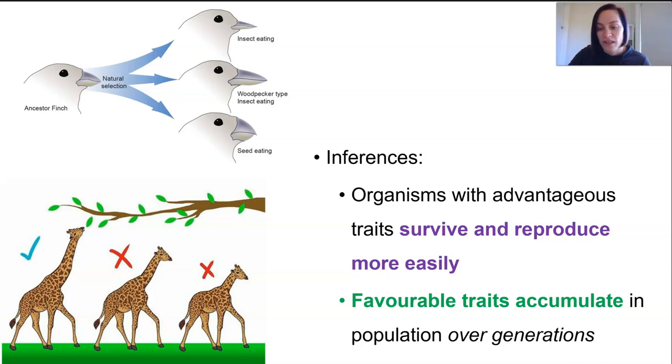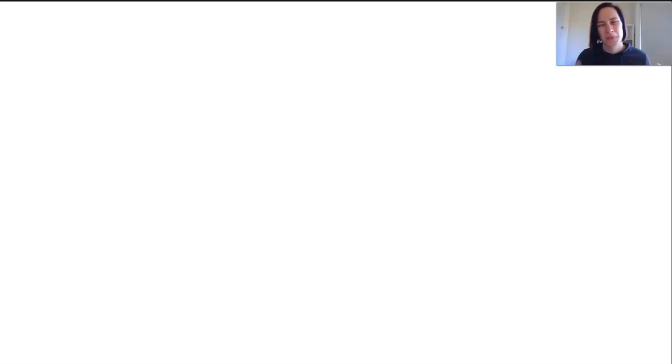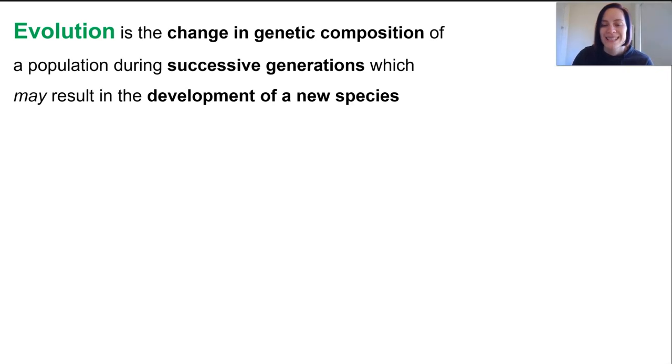Darwin, Wallace, and a few others argued that evolution occurred through natural selection. Darwinian evolution is the basis from which our current understanding of evolution arose, though there have been some tweaks and refinements — particularly in our understanding of genomes. Evolution is defined as the change in the genetic composition of a population during successive generations, which may result in the development of a new species.